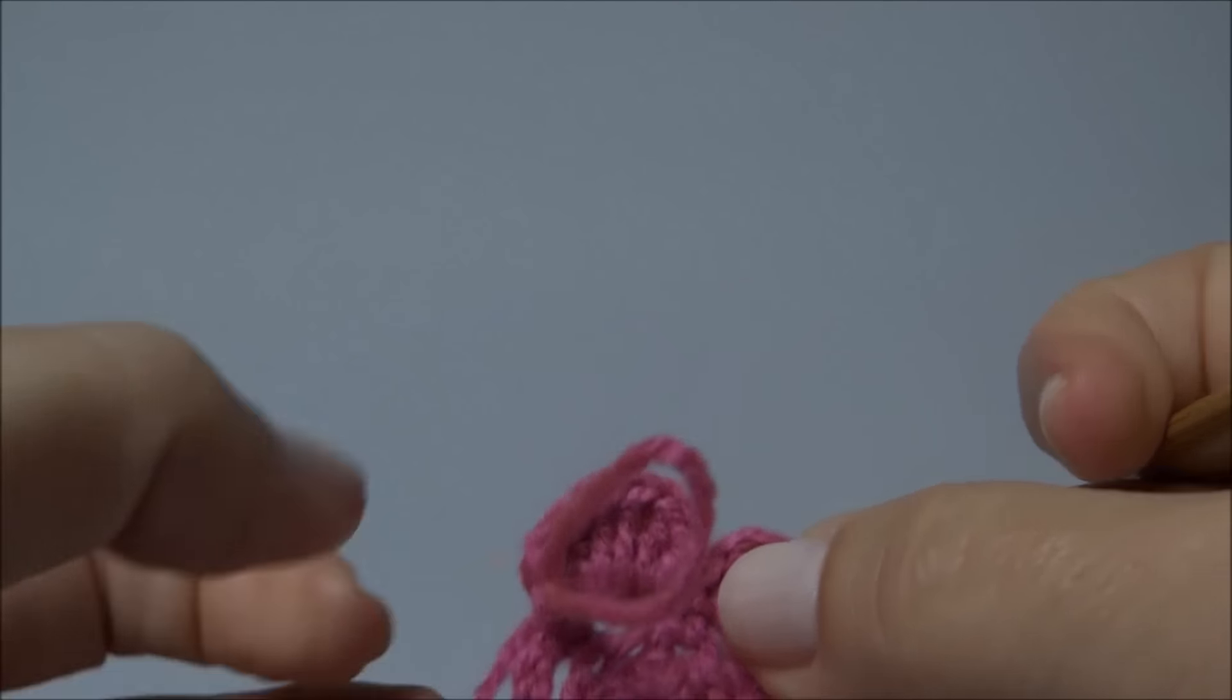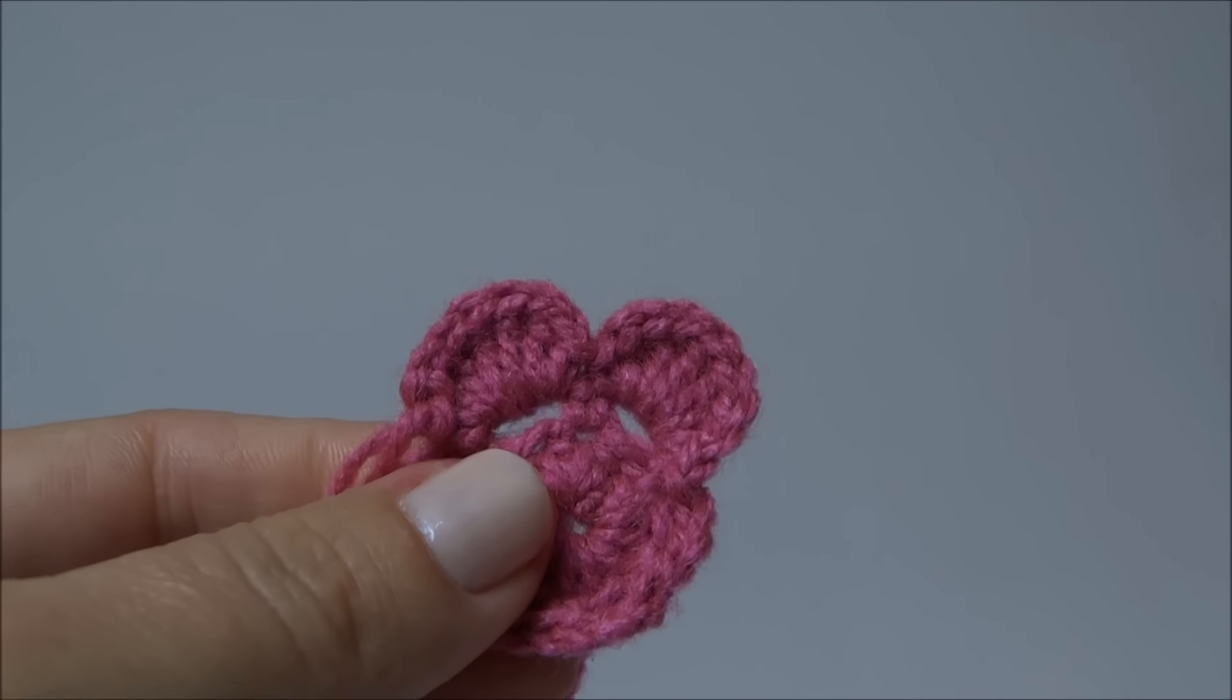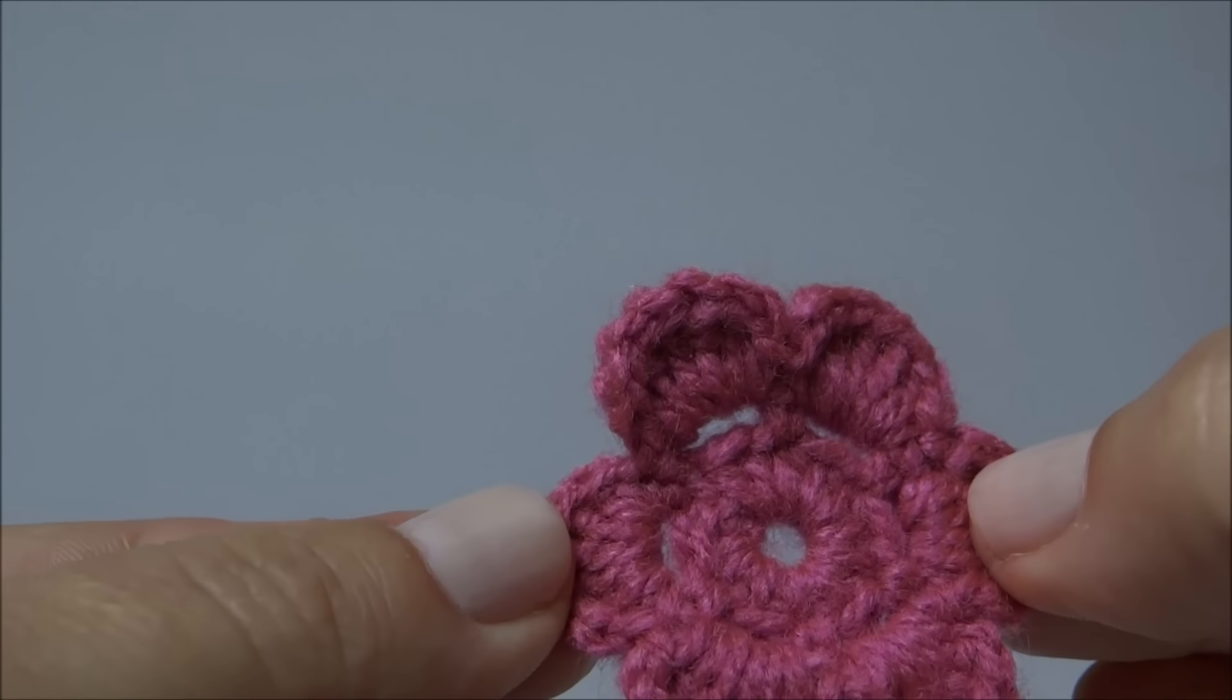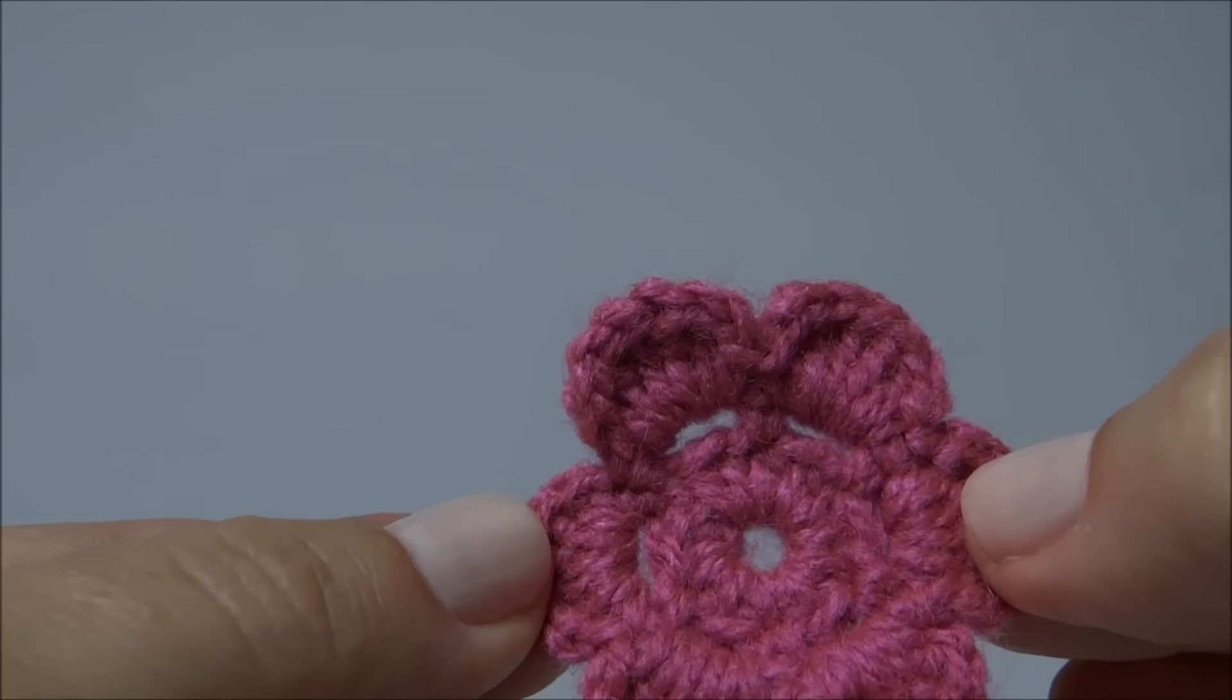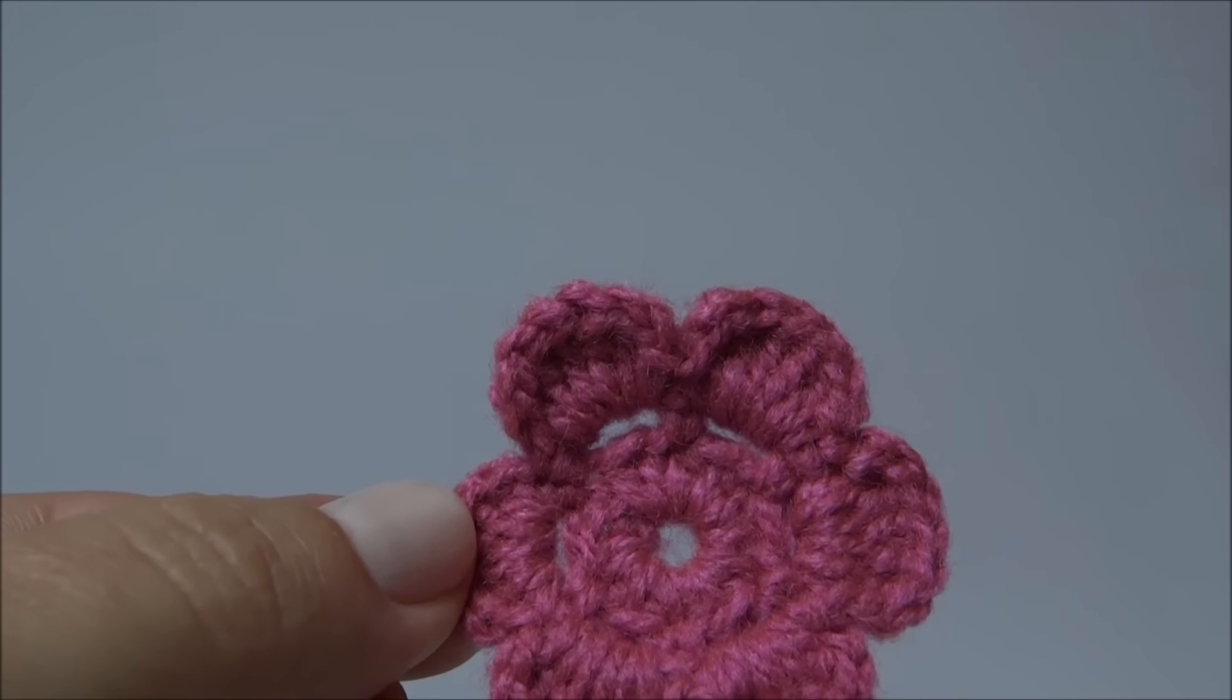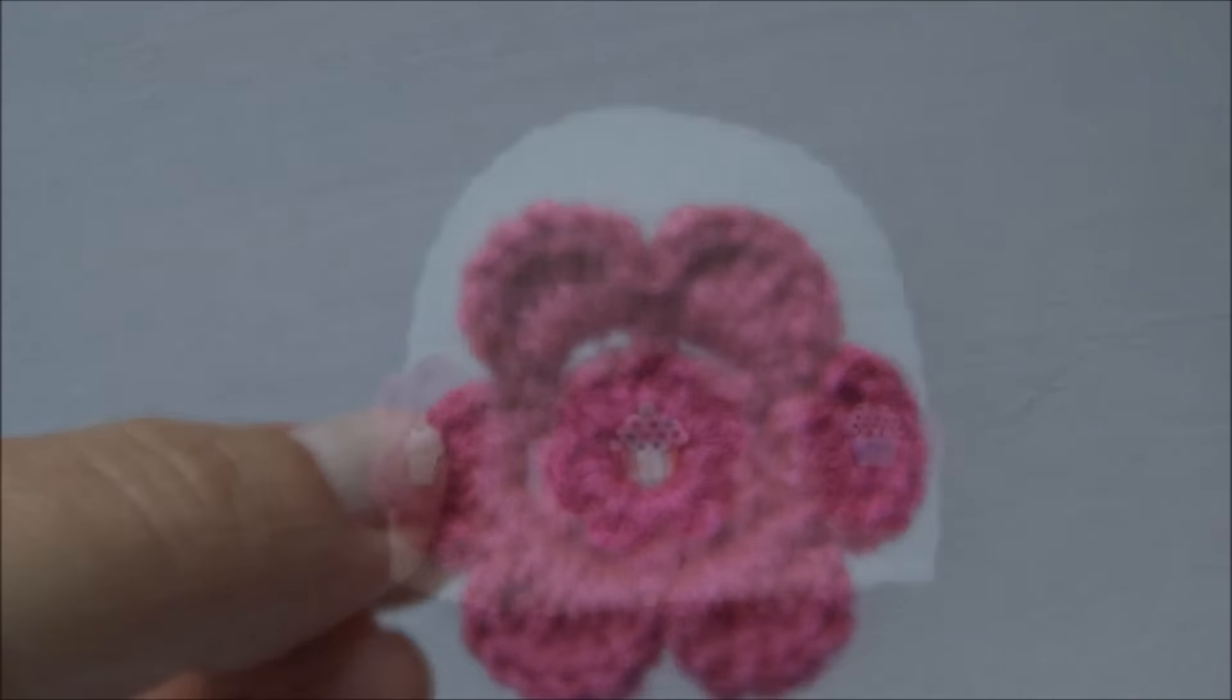E dessa forma vamos argola por argola até completar seis pétalas. Aqui já tenho a florzinha finalizada. Eu vou repetir esse processo por mais duas vezes, ficando com três flores no total. Eu volto com as três flores finalizadas e depois aplicando, fazendo a colagem na base da nossa toca.